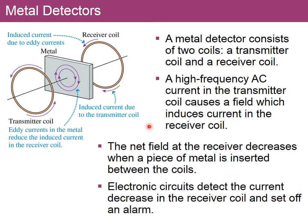Another application is metal detectors. You may have seen people on the park checking for metallic objects. The way it operates: a current produces AC radiation, inducing an AC current on a piece of metal — a ring, earring, or piece of jewelry — and the field induced is received by another coil, allowing us to detect metals.